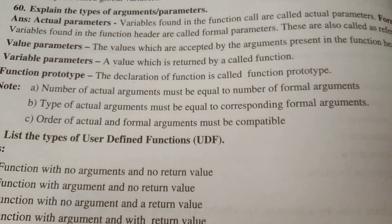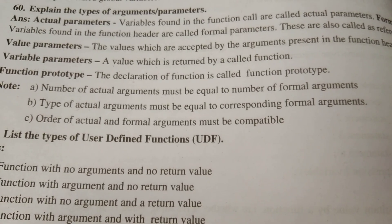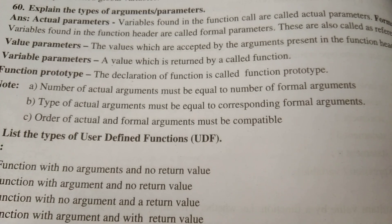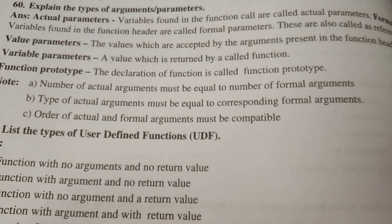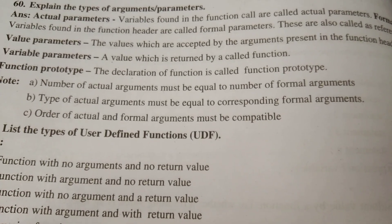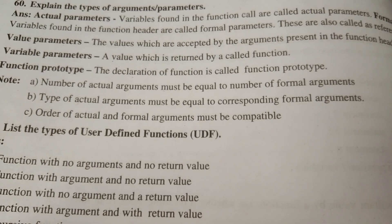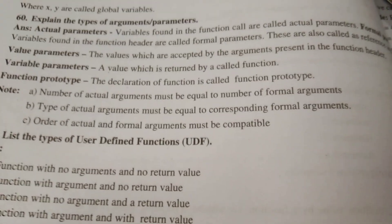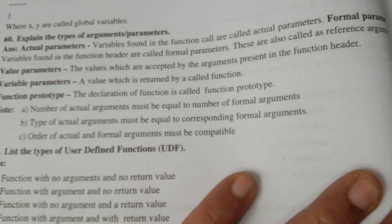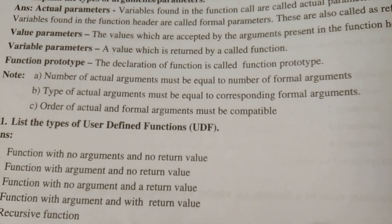Variables found in the function call are called actual parameters. Variables found in the function header are called formal parameters. These are also called reference arguments or value parameters.